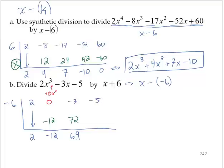69 times negative 6 is negative 414. And adding gives us negative 419.